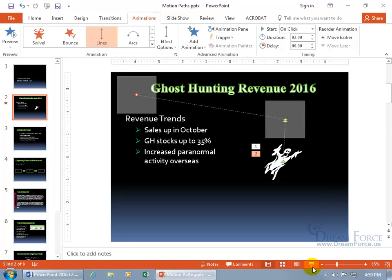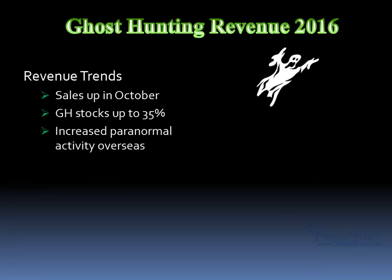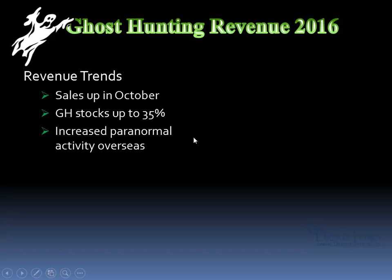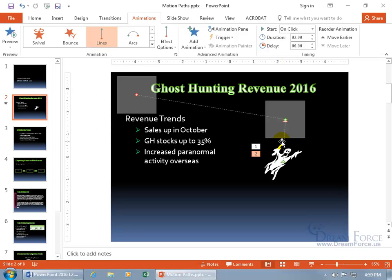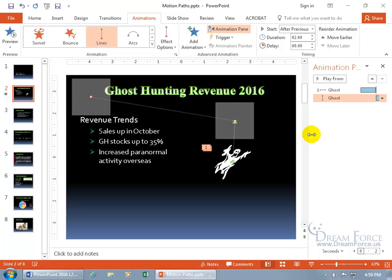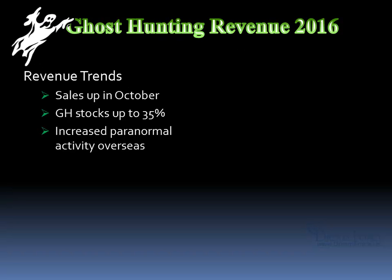So the ghost will go up and then over to the left. Let's test it in the slide show — click to activate, he goes up, then click again because it's based on clicks. If you want it fluid — going up and then immediately to the left without a click — go to the Animation Pane, right-click on animation number two, and change it from Start On Click to Start After Previous. Now it's one fluid motion. Let's test: click, he goes up and right after that goes over to the left.